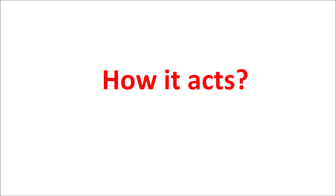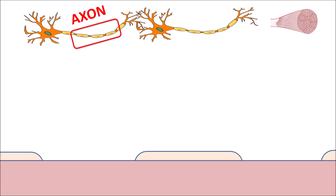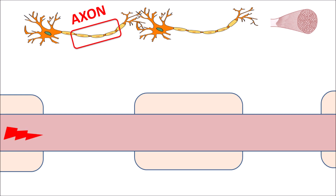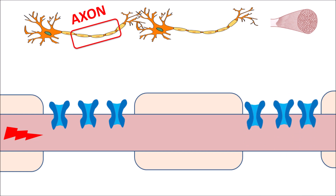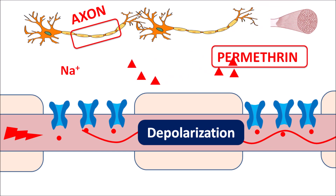Now let us see how this drug acts. Permethrin mainly acts on the neuronal transmission within the mites. This neuronal transmission is propagated through neurons to the skeletal muscle, which produces the motility of mites. The axonal conduction is very important and is mediated by voltage-gated sodium channels. When an impulse reaches the axon from the cell body, it is propagated rapidly throughout the axon by these voltage-gated sodium channels, which play an important role in the rapid conduction of the impulse.